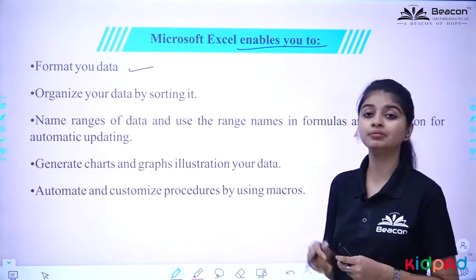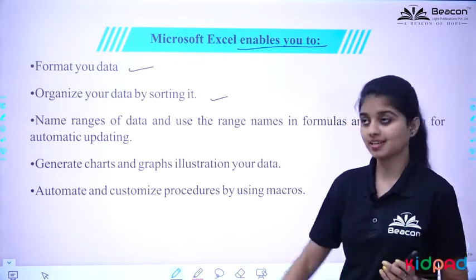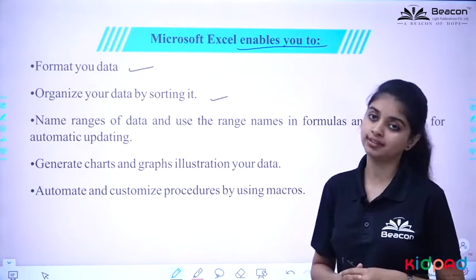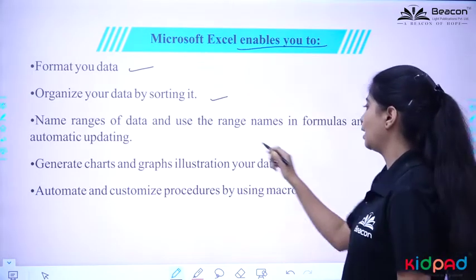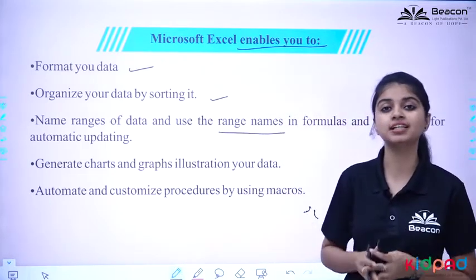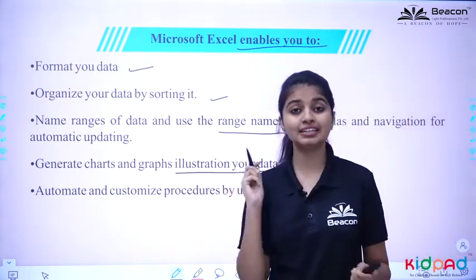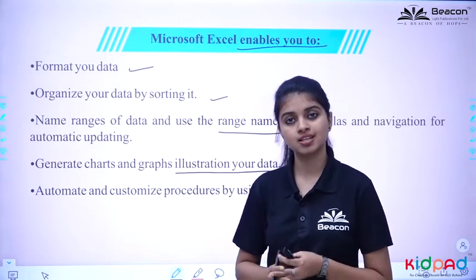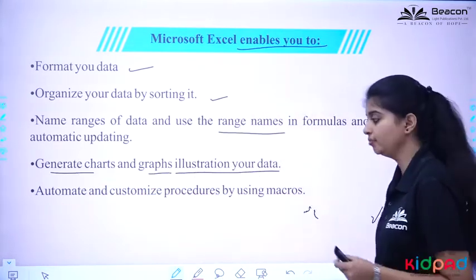First is Format Your Data. Next is Organize Your Data By Sorting It — we will sort our data in an organized way, like by name, class, and subject, and the data automatically organizes and keeps it. We can also name ranges of data and use the range names in formulas and navigation for automatic updating. Additionally, we can generate charts and graphs as illustrations for your data. Suppose we have kept some data and we want to convert it into a chart or represent it in a graphical form — we can do that in Excel.